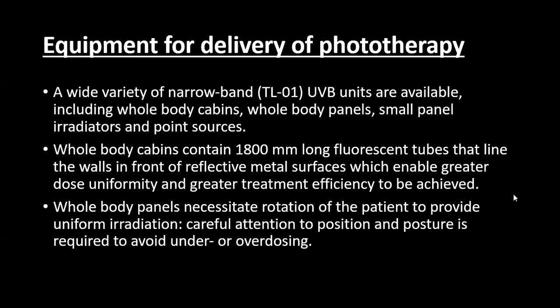The equipment for delivery of phototherapy includes a wide variety of narrow band UVB units: whole body cabins, whole body panels, small panel irradiators, and point sources. The whole body cabins contain 1800 mm long fluorescent tubes that line the walls in front of reflective metal surfaces, enabling greater dose uniformity and greater treatment efficacy. The fluorescent tubes are placed on reflecting metal surfaces to produce an even distribution of light.